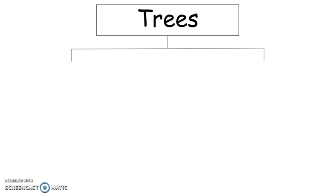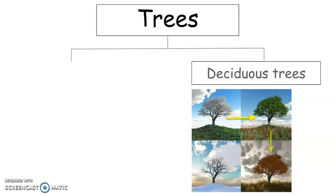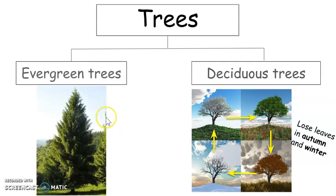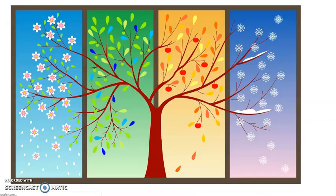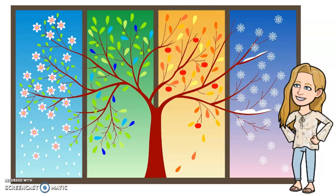And these are our two types of trees. Deciduous trees that lose their leaves in autumn and winter, and evergreen trees that are green all year round. And now you know the two main types of trees. See you next time. Bye-bye!